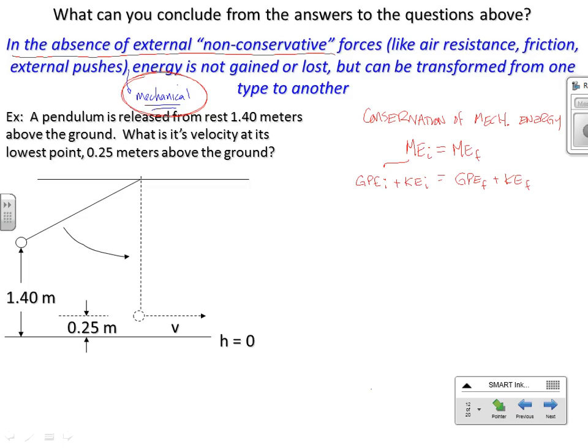Does anything go away? Is anything zero? Released from rest means that initial KE is zero. It doesn't end up at height zero, so we have MGH initial equals MGH final plus one half MV final squared. This is our conservation of energy statement.